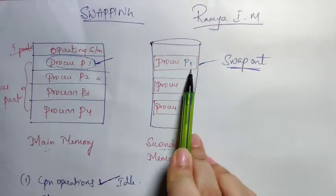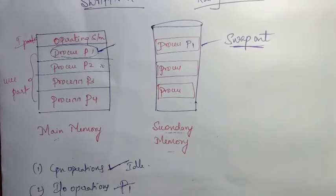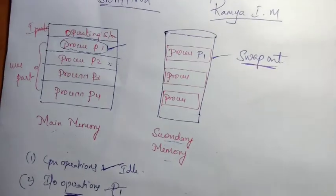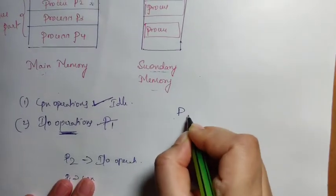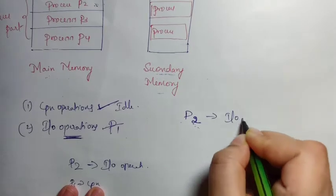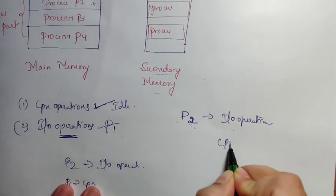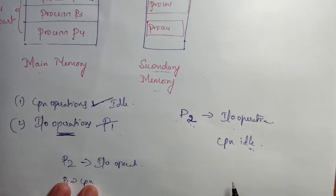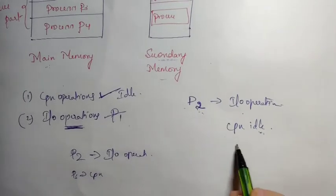Example two: if a process is waiting for some I/O operation, the CPU is idle because there is no need for the CPU during I/O. So the operating system transfers the process — for example, process P2 — from main memory to secondary memory during that I/O operation.